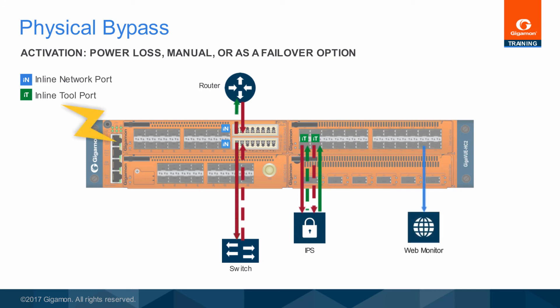When the physical bypass is activated, the upstream and downstream traffic is forwarded directly through as if the bypass switch was a simple cable. The internal circuitry is completely bypassed and no traffic is sent to the inline or out-of-band tools. While a secondary use is to permit inline tool maintenance without dropping the production network path, the main use case is when power is lost to the GigaVUE HC2 chassis. A protected inline network port pair ensures that production network links stay up.